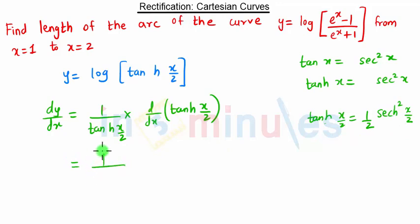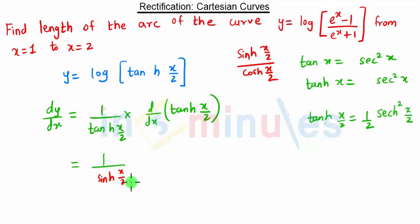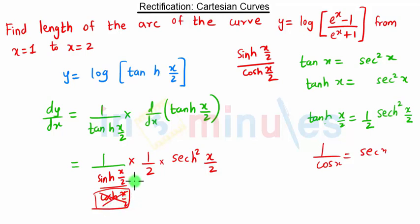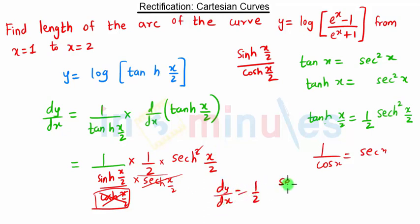So we have 1 upon tanh(x/2), which we can write as sinh(x/2) upon cosh(x/2). The derivative of tanh(x/2) is (1/2)sech²(x/2). We can write 1/cosh(x/2) as sech(x/2). So this sech(x/2) in the numerator and the 1/sech(x/2) from the denominator will cancel, giving us dy/dx = (1/2) · sech(x/2) / sinh(x/2).